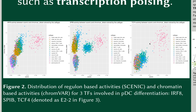When we look at the distribution of these two activity measures — one based on the regulon expression and another one based on chromatin accessibility — for some transcription factors, like TCF4 for example, we can see a simple positive or negative correlation that implies a simple role of the transcription factor as an activator or a repressor.